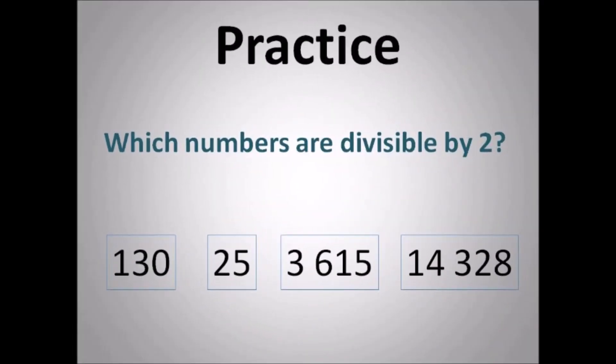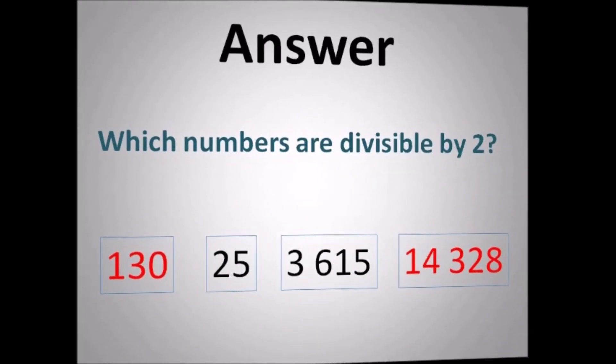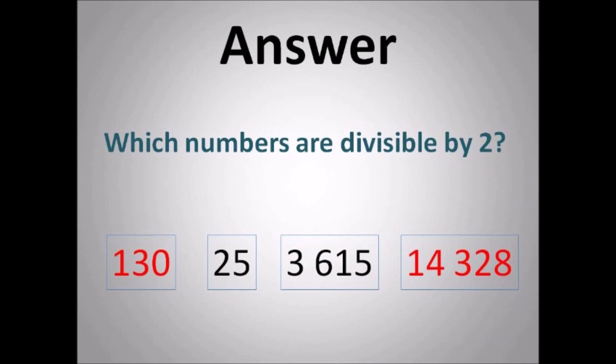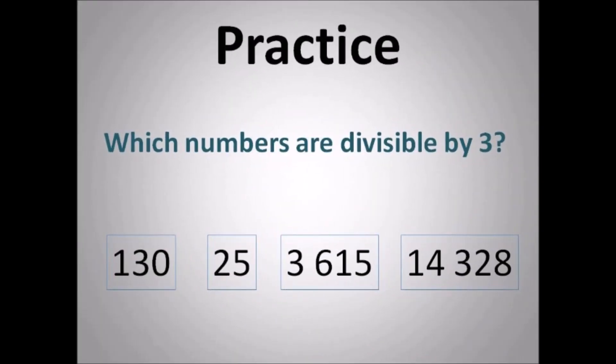Now let's practice. Which numbers are divisible by 2? Go ahead and choose your answers. The answer is 130 and 14,328. Why? You look at the digits at the back — it must end with an even number. So 130 ends with 0 and 14,328 ends with 8. 0 is an even number, 8 is an even number.